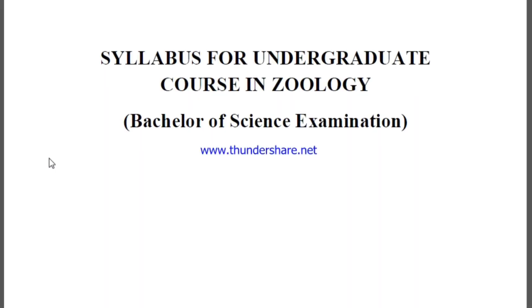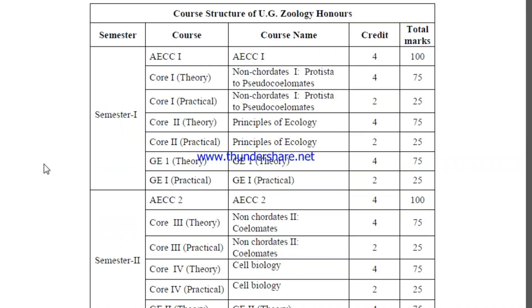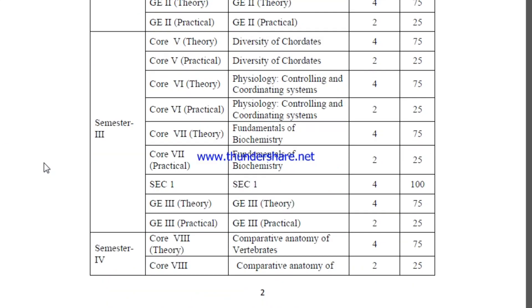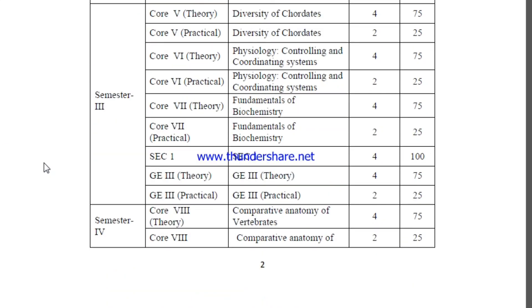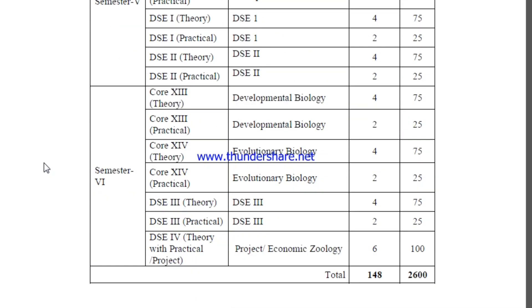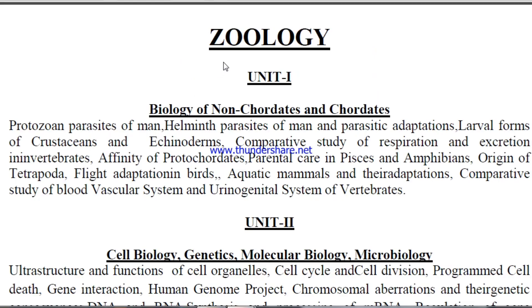I am not joking. You can see the total SSB syllabus, which is exactly the same as the syllabus of BSc. This complete syllabus has been made by combining the papers of all semesters of BSc. This is the syllabus for undergraduate course in zoology — Bachelor of Science under choice-based credit system. The course structure includes UG Zoology Honours: Semester 1 non-cadets, Semester 2 cell biology, Semester 3 diversity, physiology and biochemistry, Semester 4 comparative anatomy and metabolic processes, Semester 5 molecular biology and genetics, and Semester 6 developmental biology and evolutionary biology.